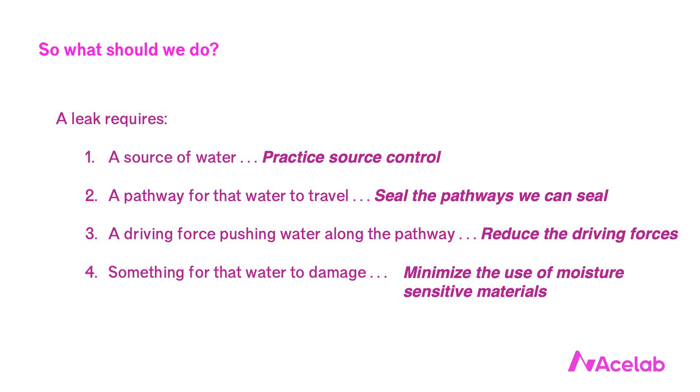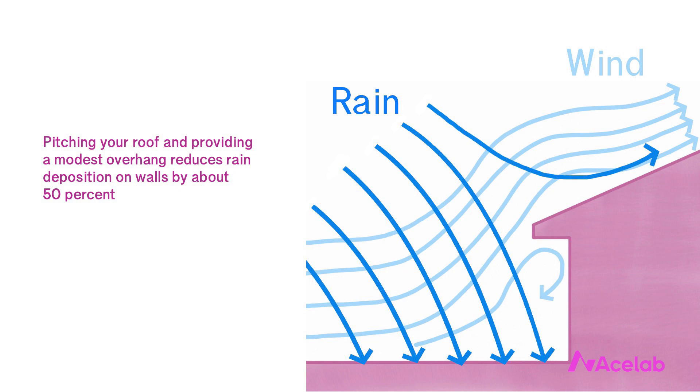First, source control. The sources we're dealing with are rain and groundwater. We can design our buildings to minimize the water load — and it is appropriate to think of water as a load, just like structure — on the most critical or sensitive parts of the building. For example, with roof overhangs, cornices, recessed windows, and setbacks. It's easy to dismiss how important this is, but the measured data is pretty shocking. Did you know that pitching your roof and providing a modest overhang reduces rain deposition on walls by about 50%? That's a really big deal, and it'll take the edge off if you're not perfect about dealing with everything else on the list.